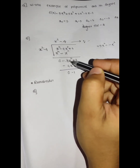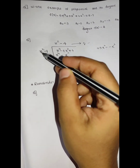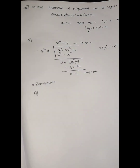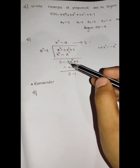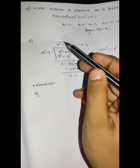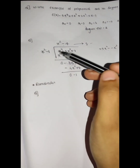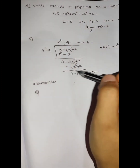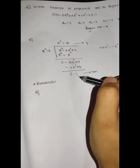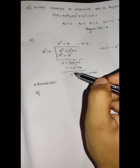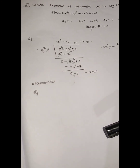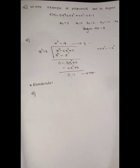Minus 4x squared is minus 4x squared. Minus 4 into x squared is minus 4x squared. Then minus 3 into minus 1 into minus 4 is plus 4 — that is correct. Minus 1 is a remainder. This is the remainder theorem.